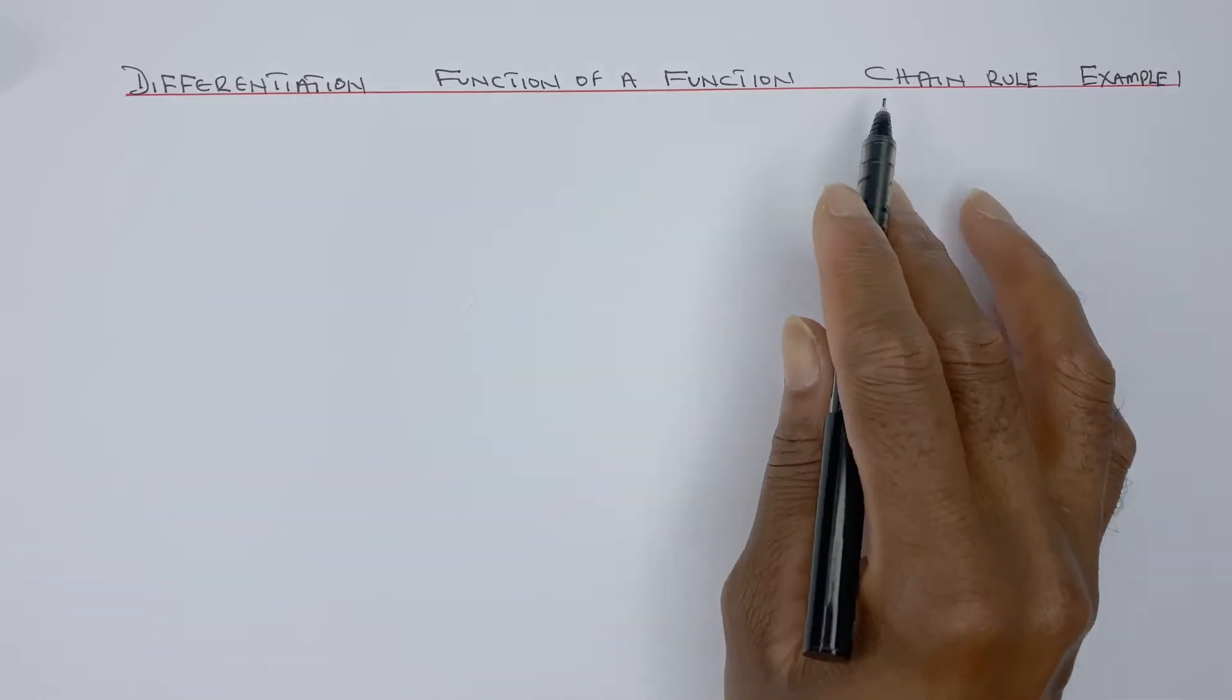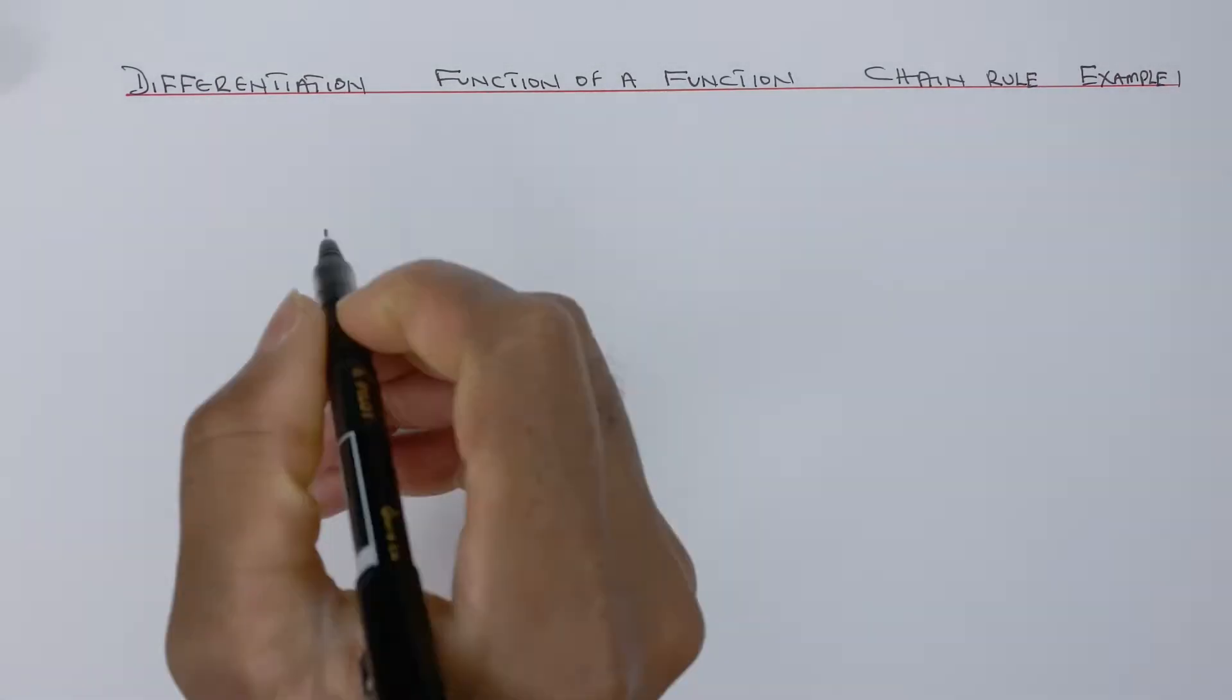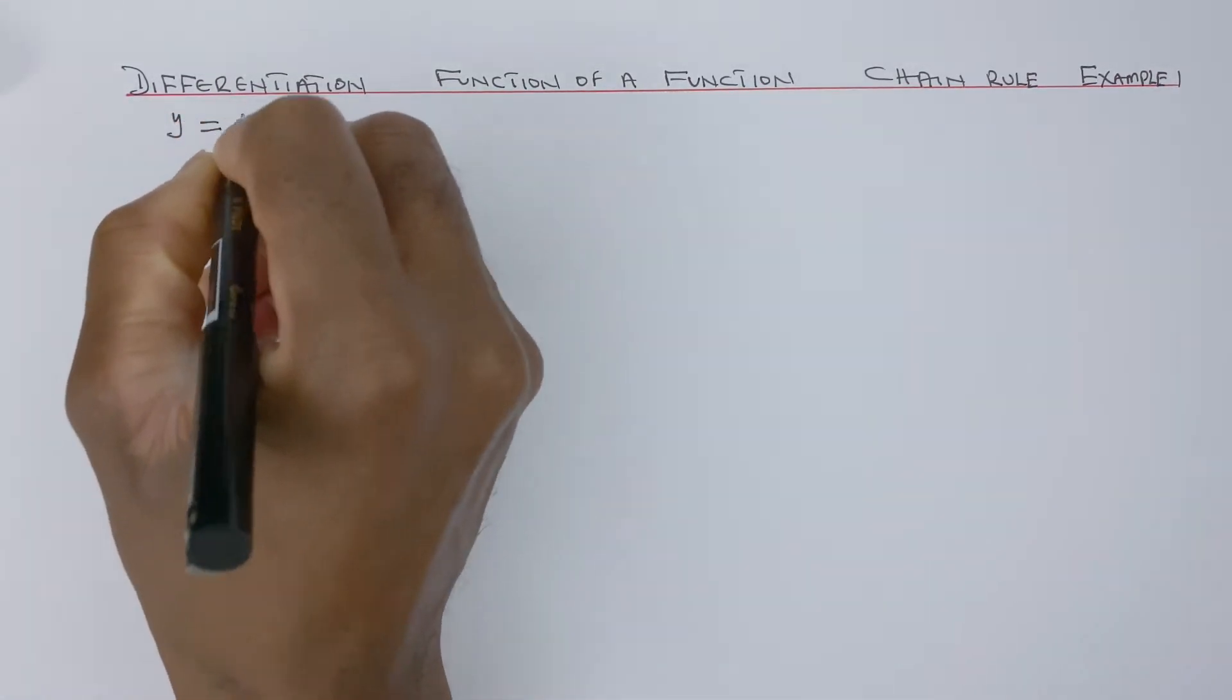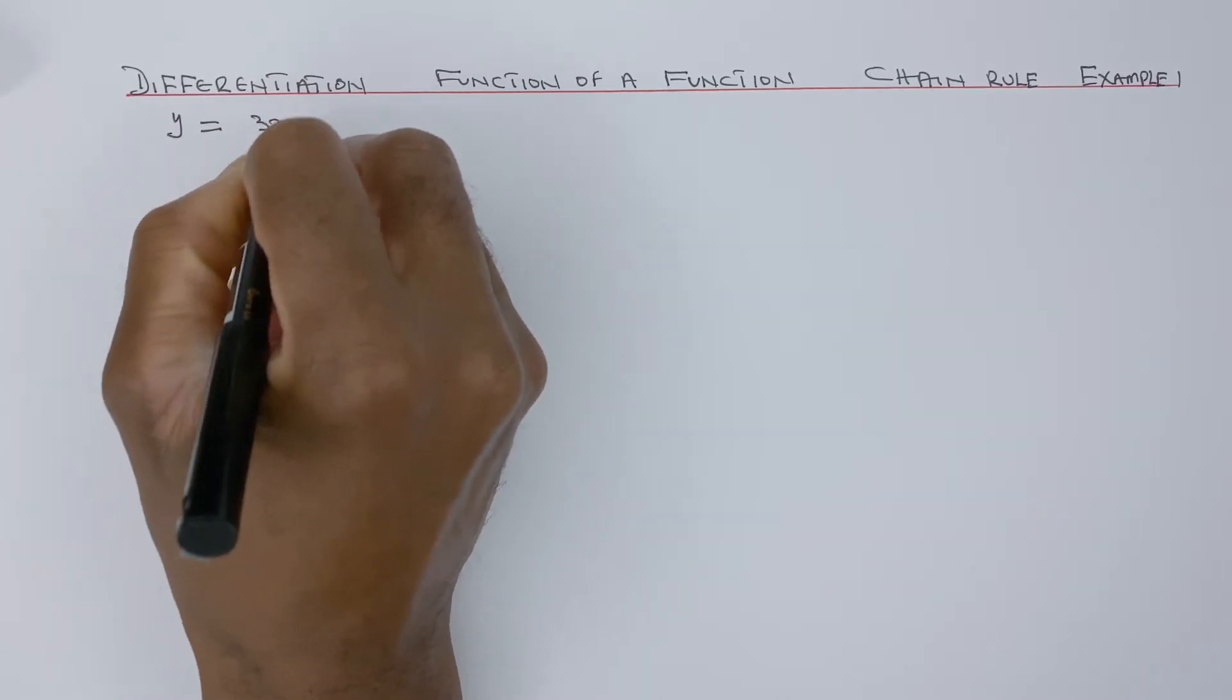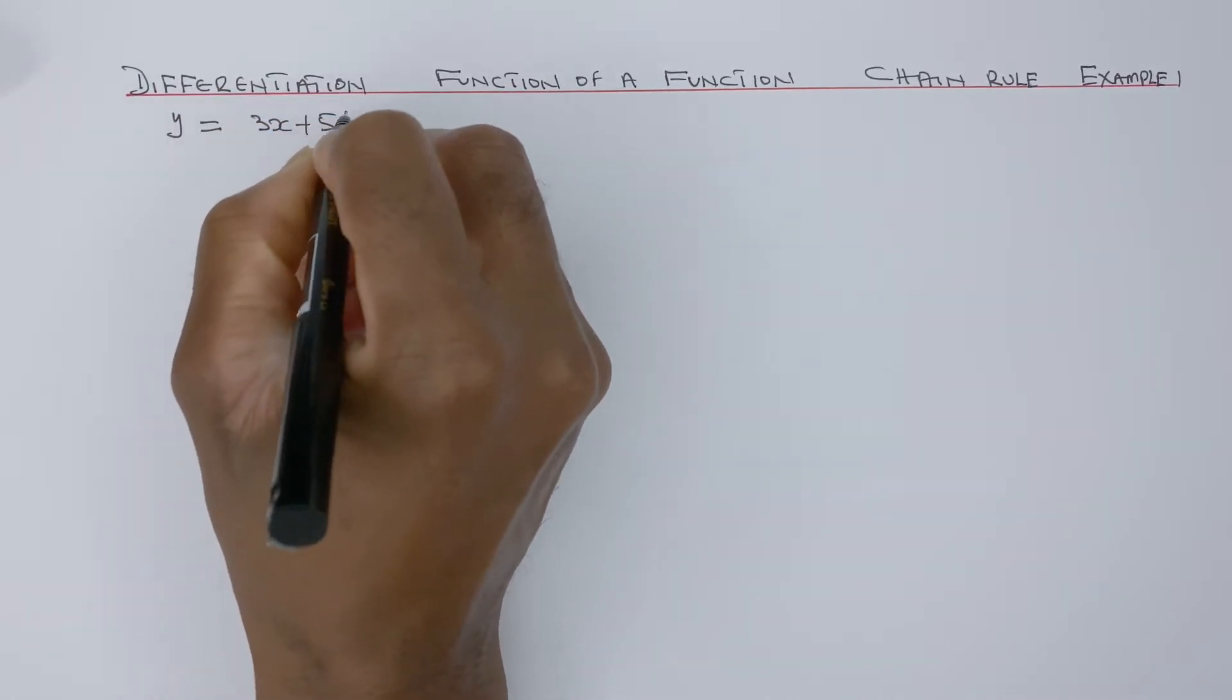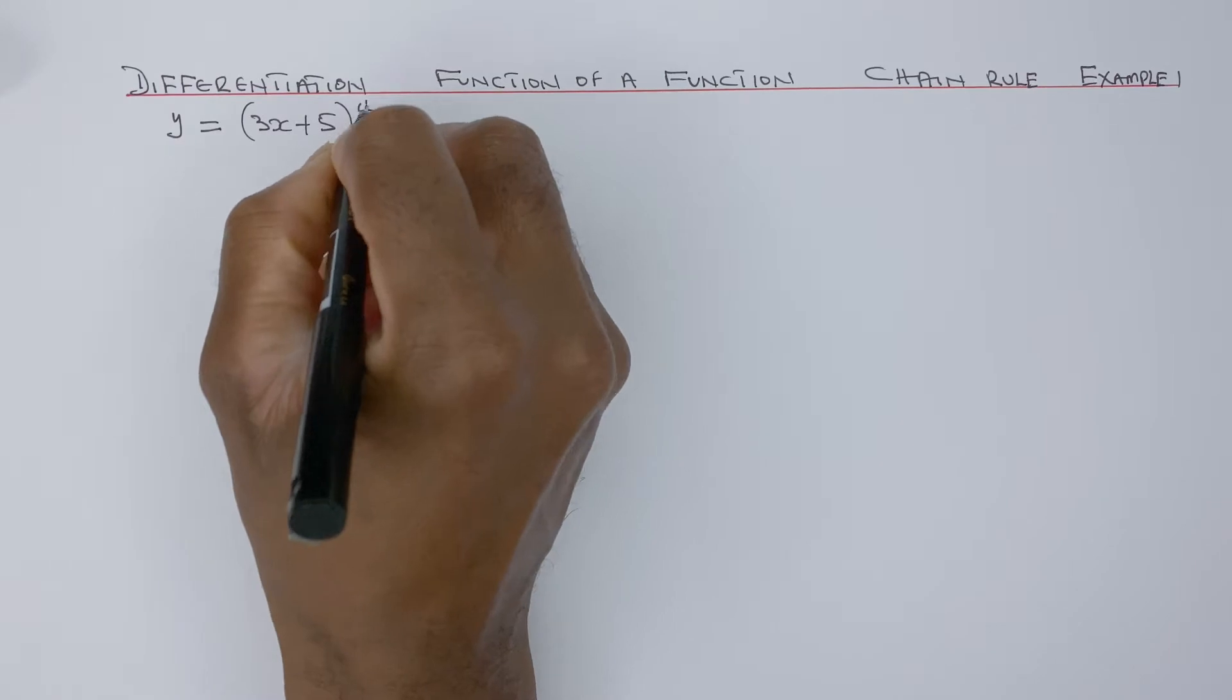Differentiation function of a function chain rule. Example 1. If y equals 3x plus 5 to power 4.